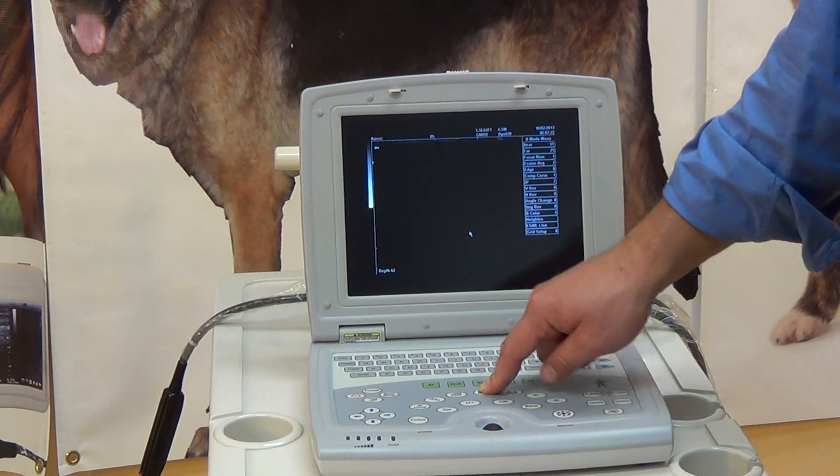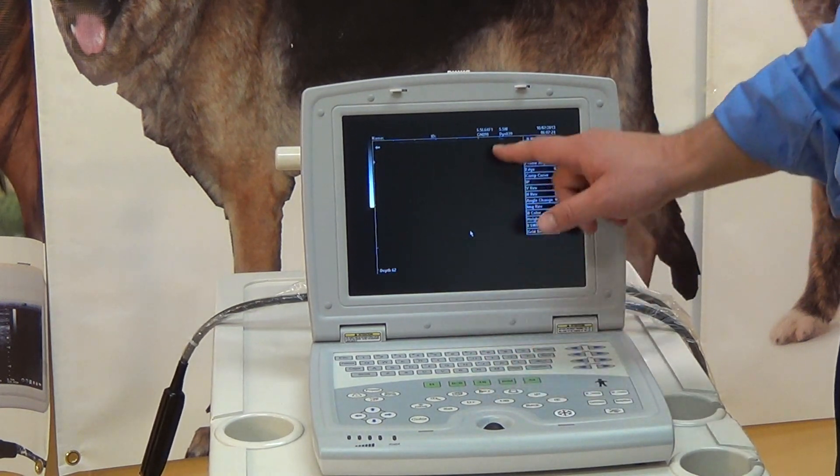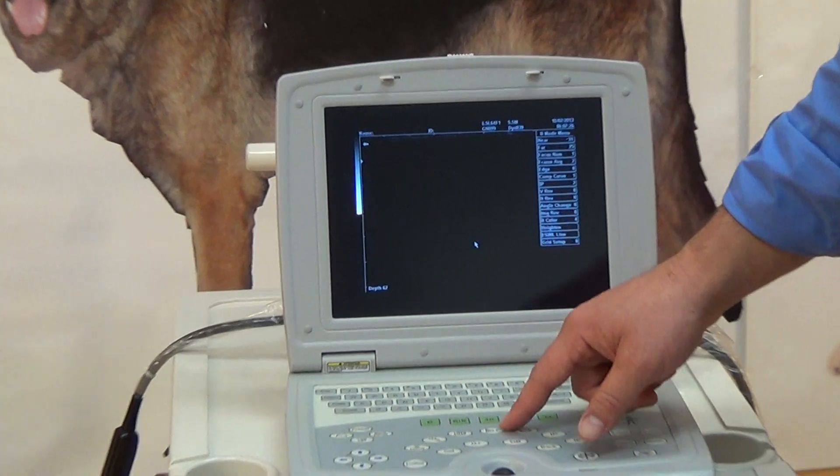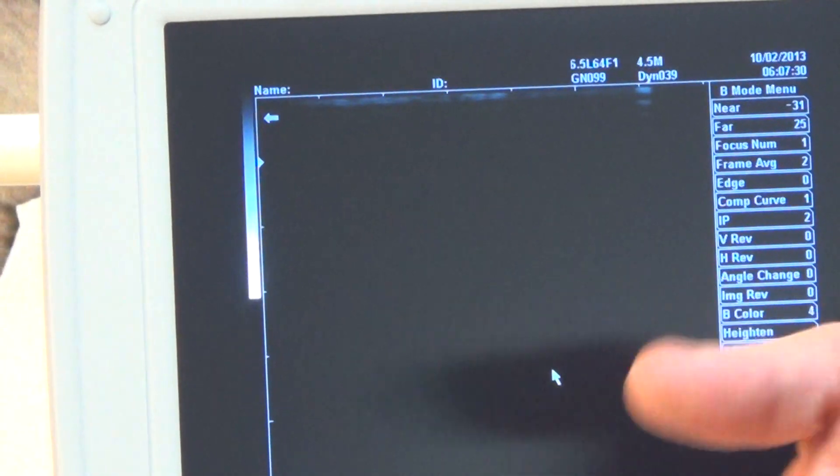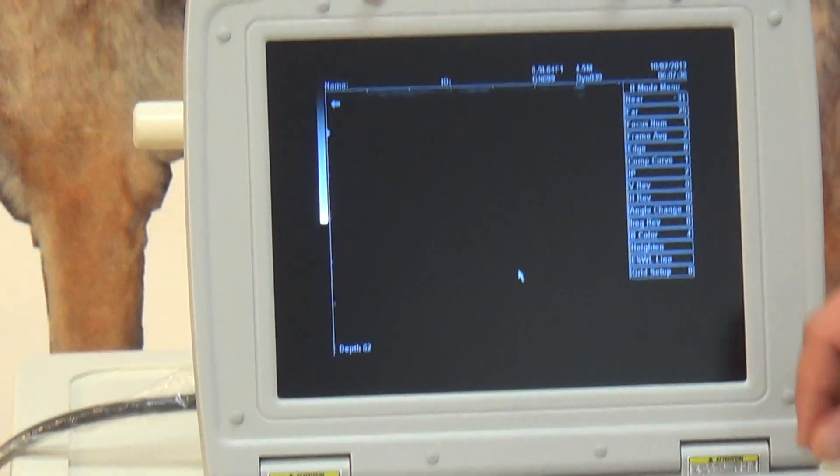This button here changes your frequency. So that is a button that most people do use, and that's signified up here. The lower the frequency, the deeper you penetrate into the animal that you're looking at, the less resolution. The higher the frequency, the shallower you can get, but the more clear the image will be.